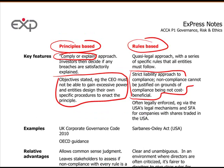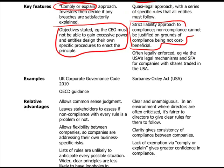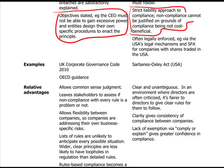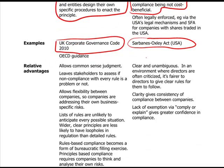We're still looking at the principles-based versus rules-based approaches of corporate governance. We left the last chapter on this area and we're now going to carry on with this conversation. The UK Corporate Governance Code is a good example of a principles-based approach, as opposed to Sarbanes-Oxley in America, which is a rules-based approach.